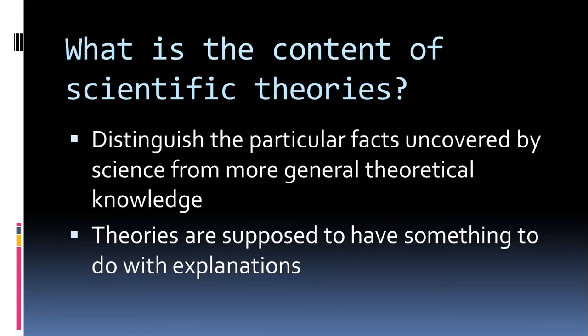The basic question here is: what are the contents of scientific theories? We're trying to distinguish particular facts covered by science from the more general theoretical aspects of knowledge. What a theory presumably is is the more general bit of scientific knowledge, and I take it that theories are supposed to have something to do with explanation — so if you have a theory, you don't just know some facts, you understand the system and can explain it in some important way.